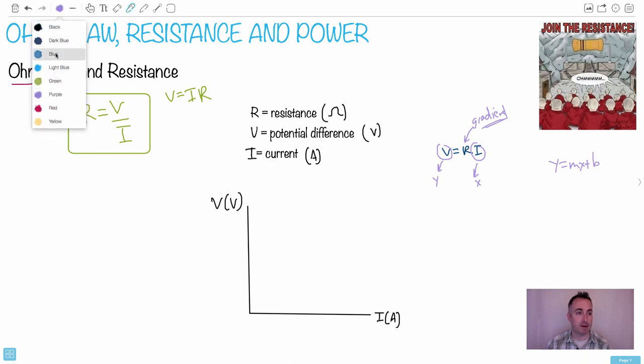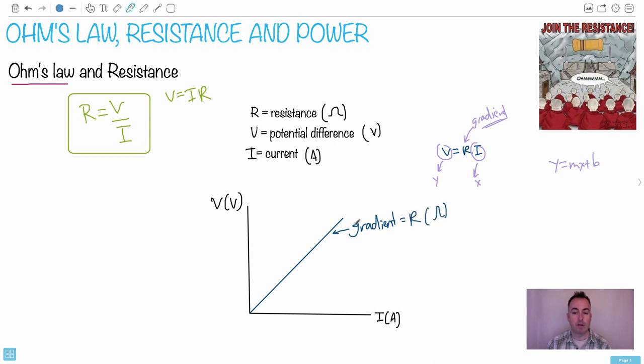That means that this should be a straight line and it should pass through the origin because there's no plus anything, right? So it's not shifted up or down. That means then if I draw it right, it should look like something like that. And where we know that the gradient, this is going to be important. The gradient is going to equal the resistance, which is measured in Ohms. That's because the gradient will be delta Y over delta X, which is V over I. And that's the definition of gradient, delta V over delta I.